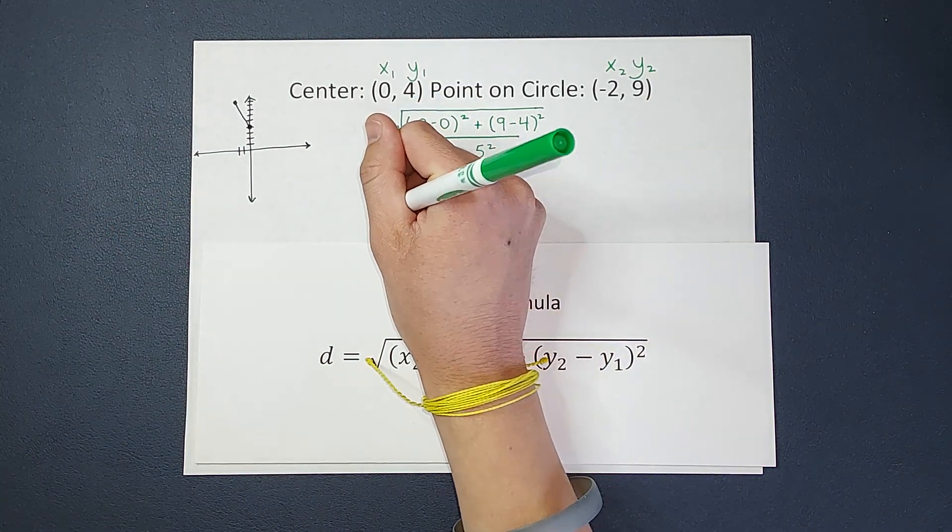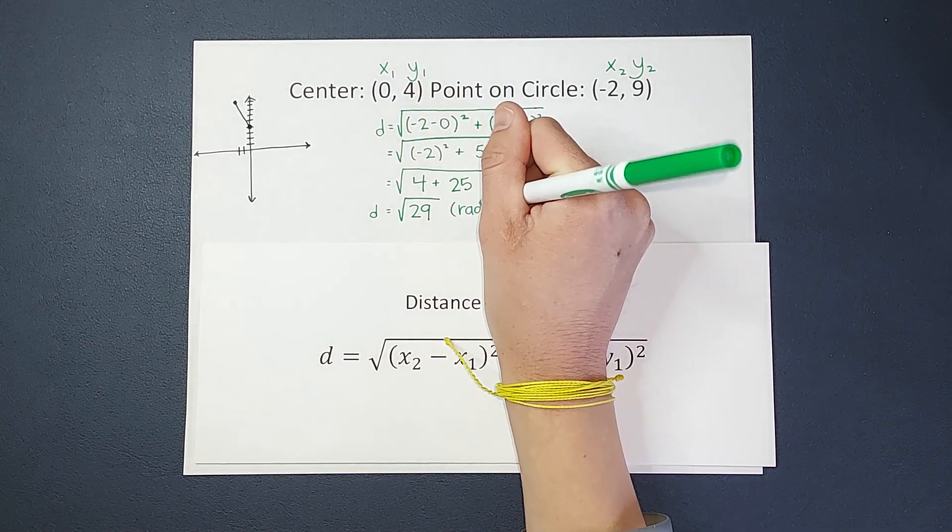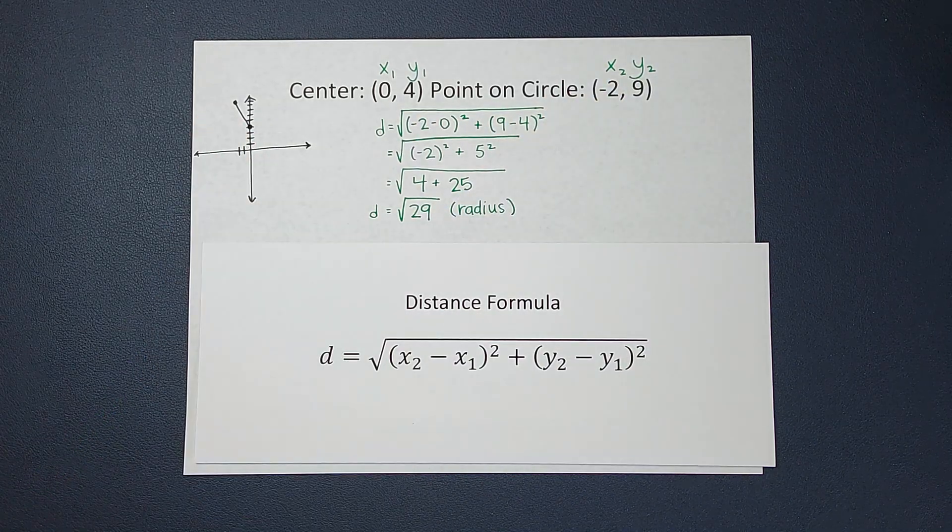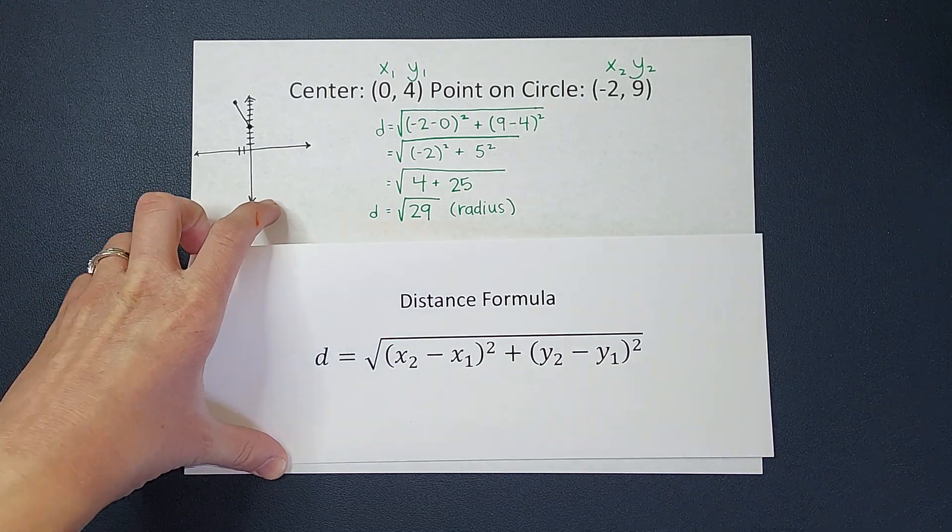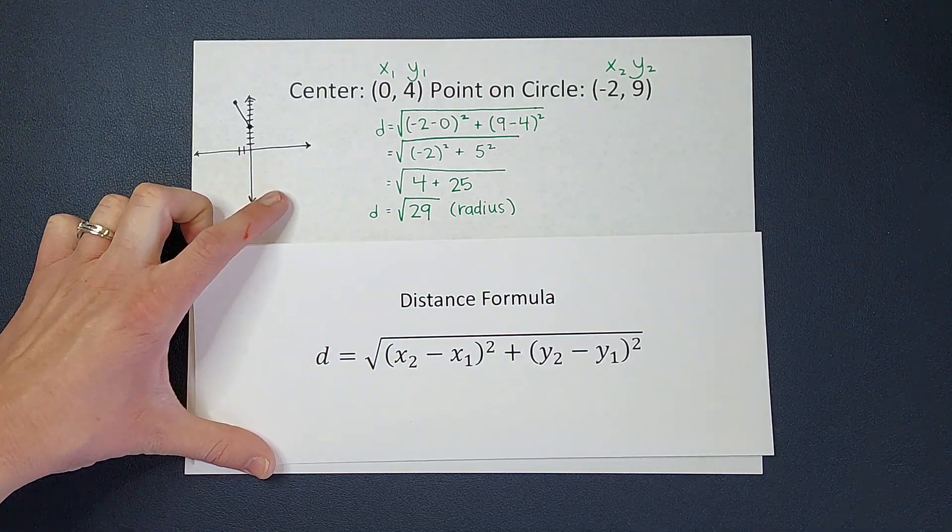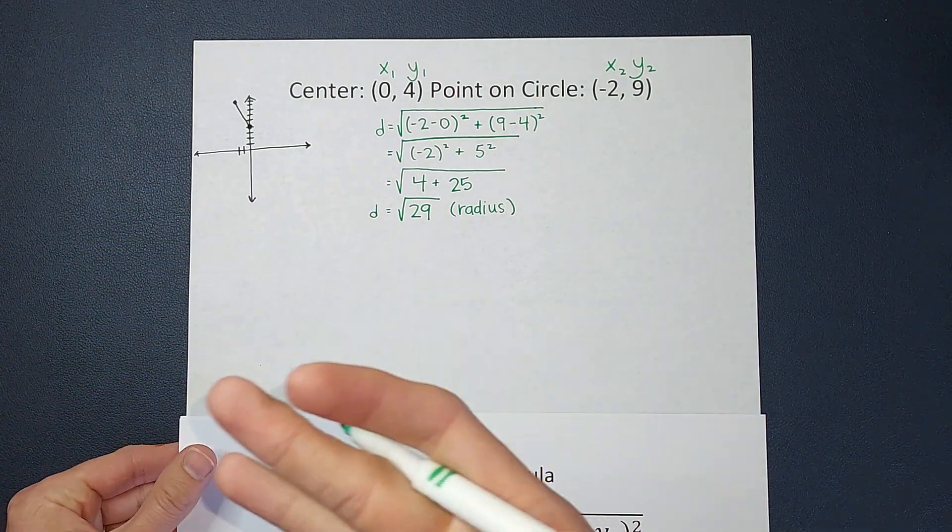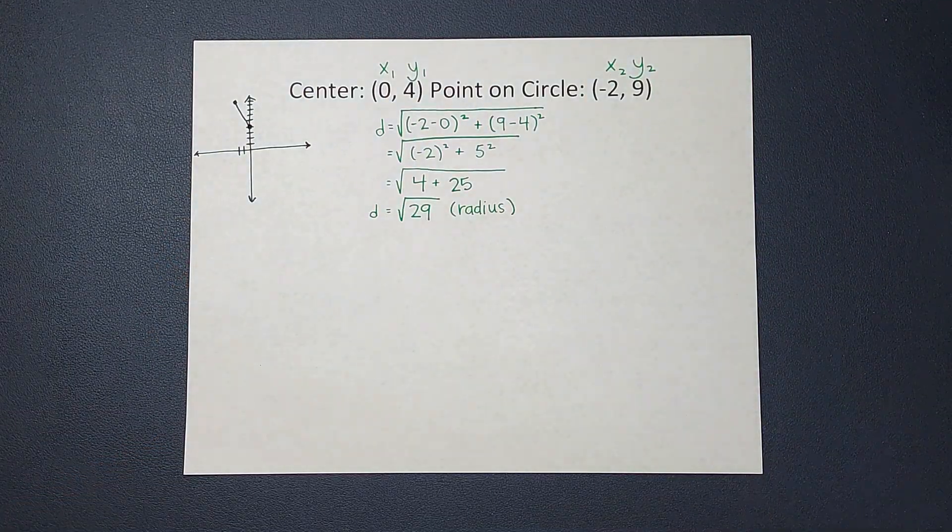That is the distance between those two points, or we would like to call it, in this case, our radius, because it goes from the center to the edge of my circle. So now, if we plug the square root of 29 into our calculator, it's not going to be a pretty number. So for now, we're just going to leave it as the square root of 29, but just hang with me, it's going to be okay.